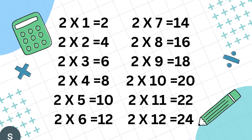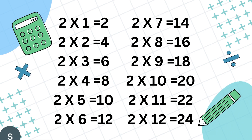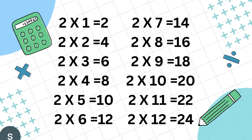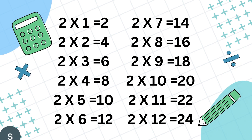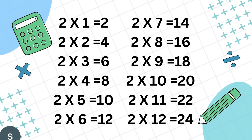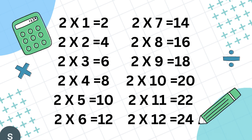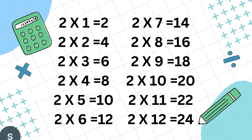2 7's are 14, 2 8's are 16, 2 9's are 18, 2 10's are 20, 2 11's are 22, 2 12's are 24.